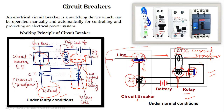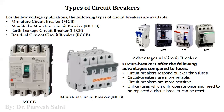Circuit breakers have certain advantages over fuses: the same circuit breaker can be used multiple times, it has automatic operation, it has a fast response compared to fuses, and it is more reliable and more sensitive. We simply have to reset them — no replacement is needed. Circuit breakers used in low voltage applications include miniature circuit breakers (MCB), molded case circuit breakers (MCCB), leakage circuit breakers, and residual current circuit breakers (RCCB).